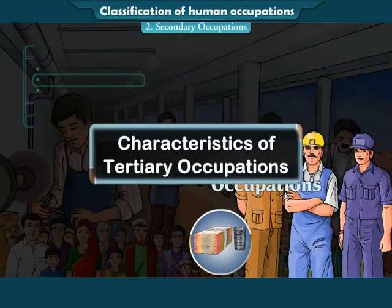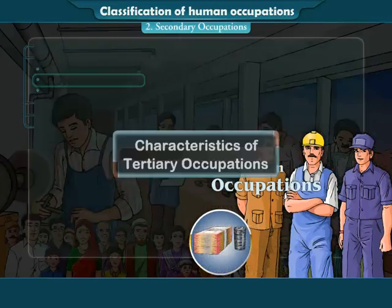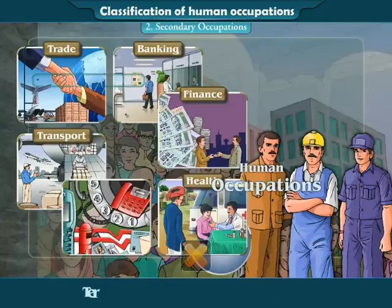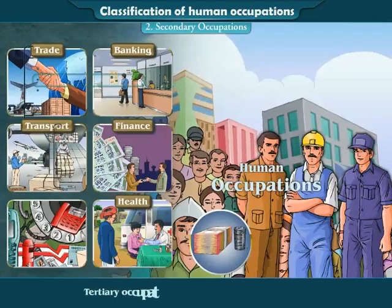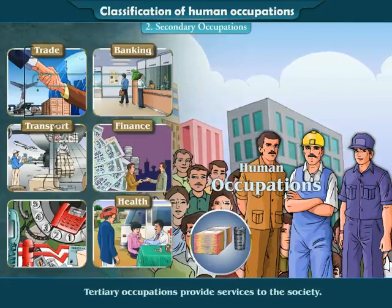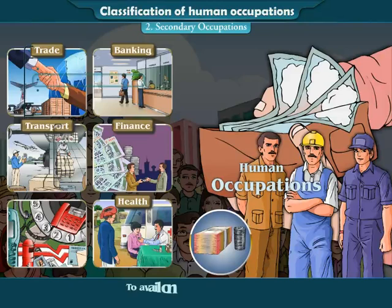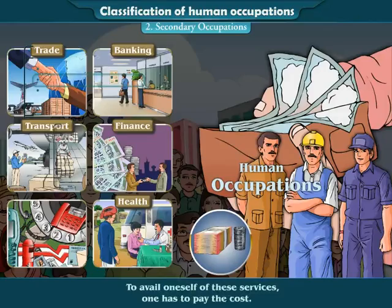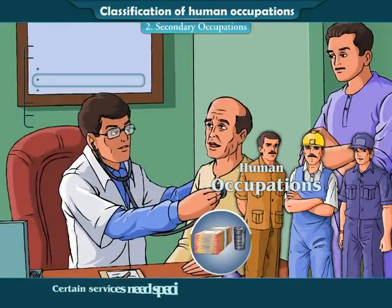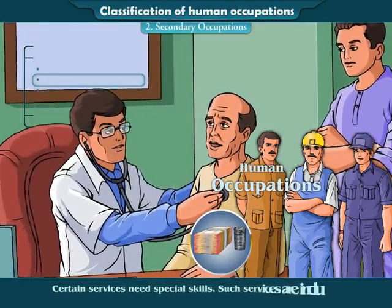Characteristics of Tertiary Occupations: First, they do not produce any item. Second, tertiary occupations provide services to the society. Third, to avail oneself of these services, one has to pay the cost. Fourth, certain services need special skills.